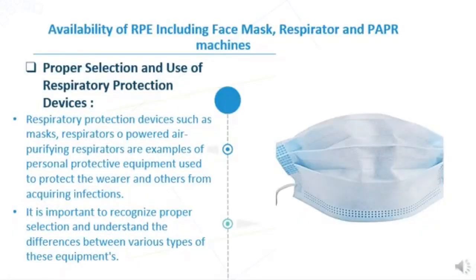Regarding the availability of respiratory protection equipment, including face masks, respirators, and PAPR machines, we have to consider that the proper selection and use of the respiratory protection device is really significant. Respiratory protection devices such as masks, respirators, or PAPR machines are examples of personal protective equipment used to protect healthcare workers and others from acquiring infections. It is critical to recognize the proper selection of these devices and understand the differences between various types and categories.